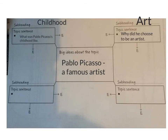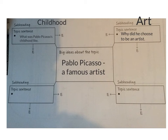My next idea that I think children would be interested in reading about, and to help them understand more about Pablo Picasso, is around his art. My topic sentence is: why did he choose to be an artist? Then I'm going to research and find out a couple of reasons about why he chose to be an artist to extend on that idea.